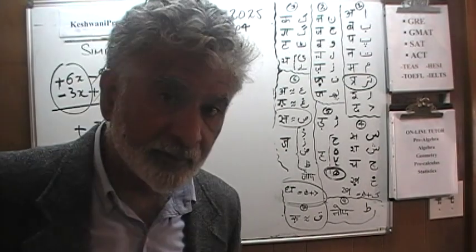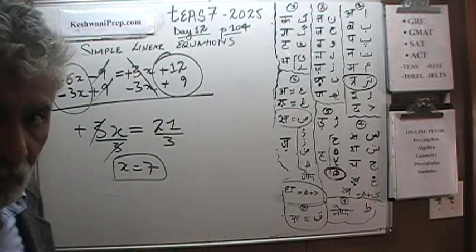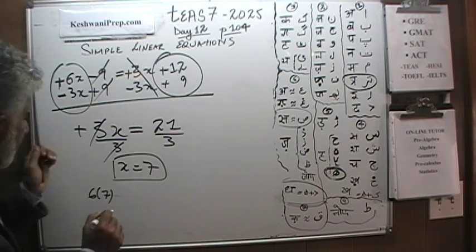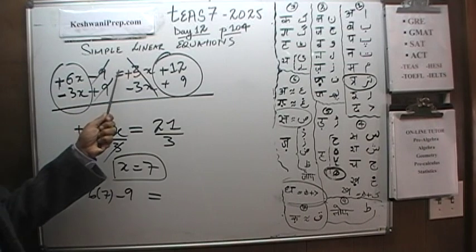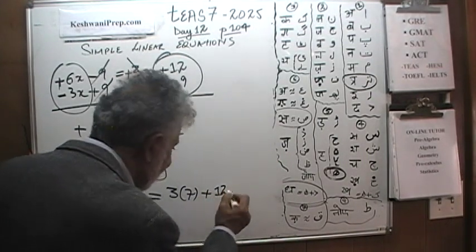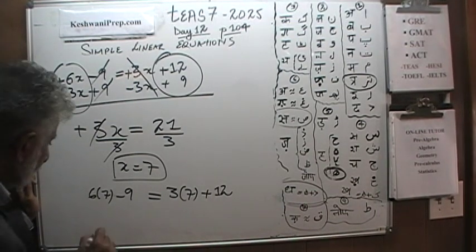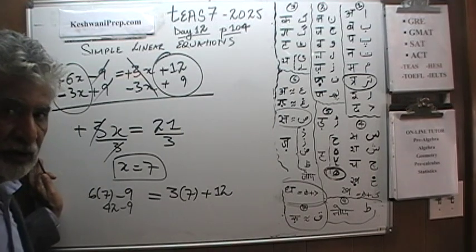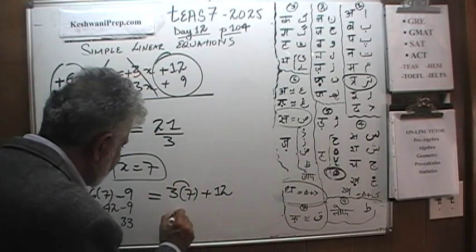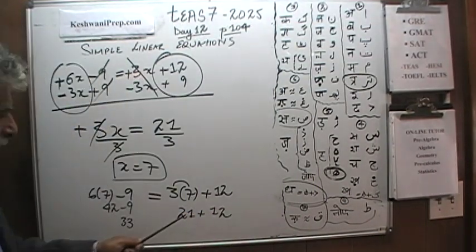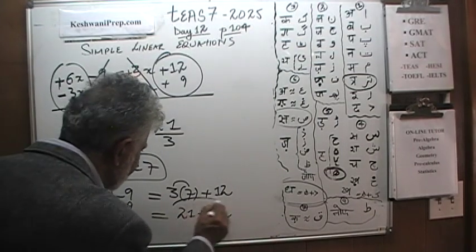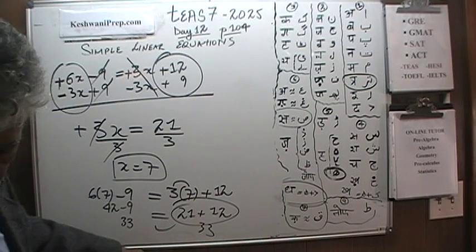Let's quickly verify. We were told 6x minus 9 equals 3x plus 12, and we claim x is 7. So 6 times 7 minus 9 should equal 3 times 7 plus 12. On the left: 42 minus 9 is 33. On the right: 21 plus 12 is 33. It checks out — this answer is correct. That was question number 5, the last question on that page.